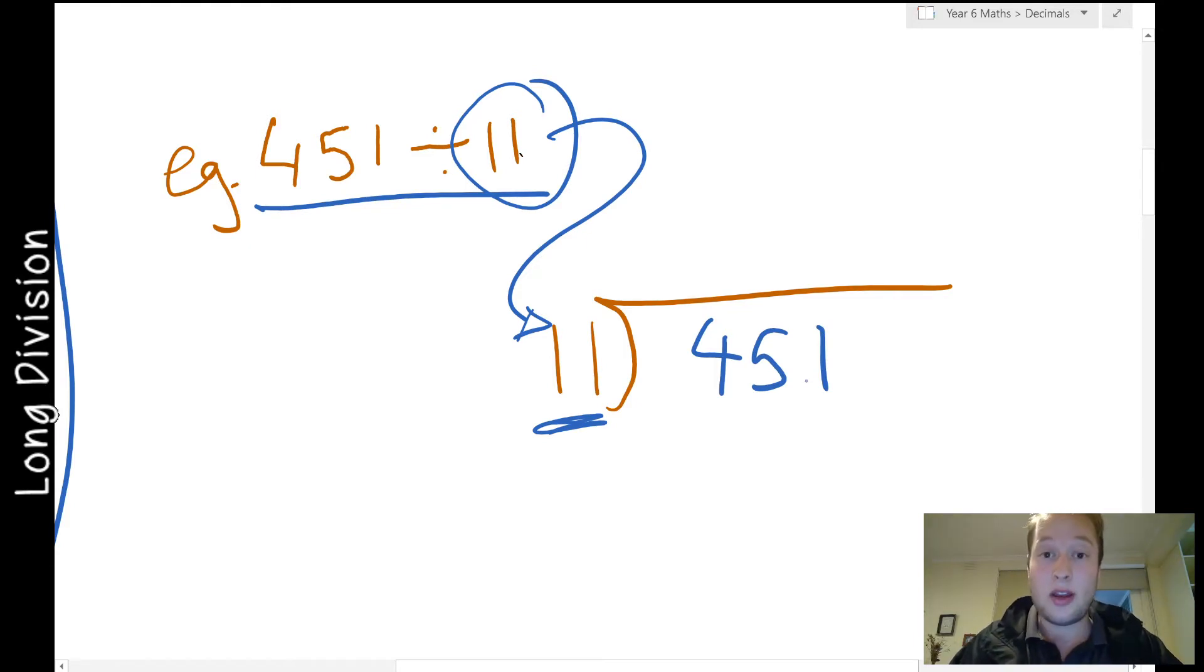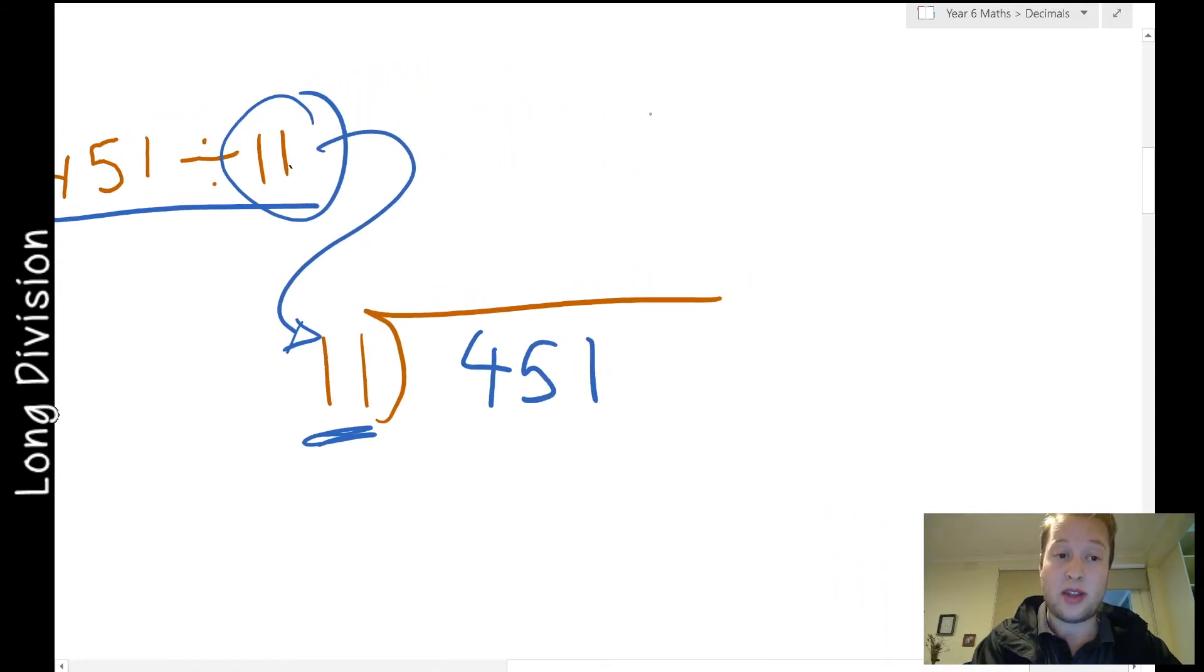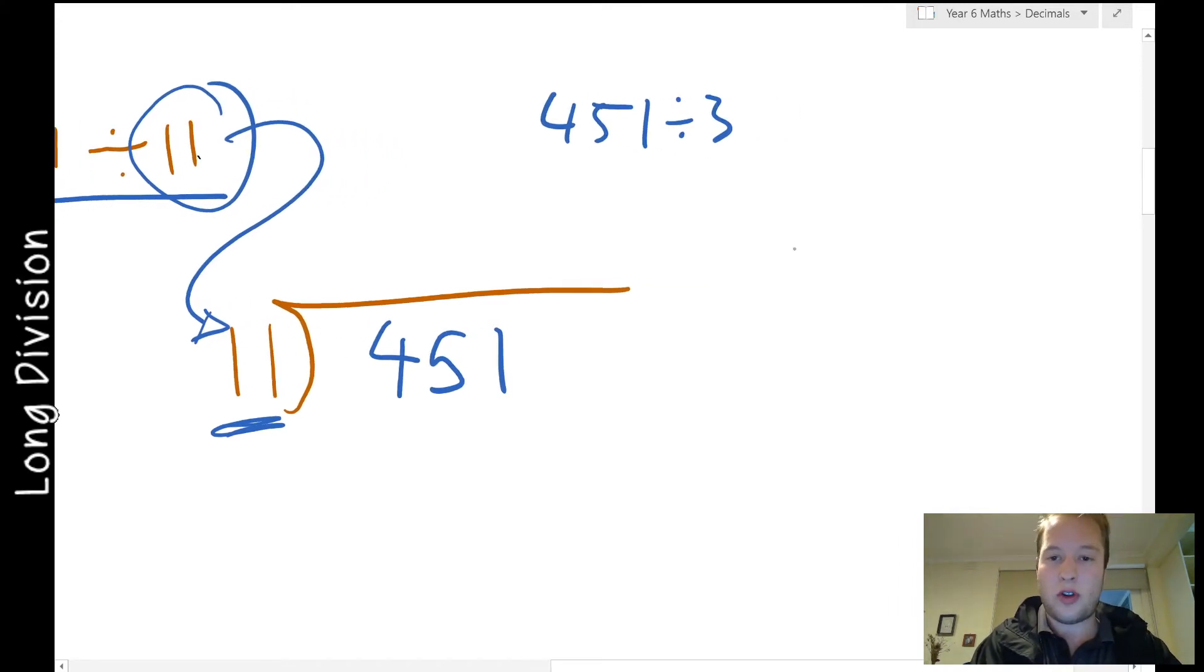The main difference between long division and short division is short division is when you normally have a one-digit number, so it might look like 451 divided by 3. We'd write it the same way: 4, 5, 1. 3 into 4 goes once with one remainder. 3 into 15 is five times no remainder. 3 into 1 is 0 and then I've got the remainder, so you could say remainder 1 or you could keep going with decimal points.